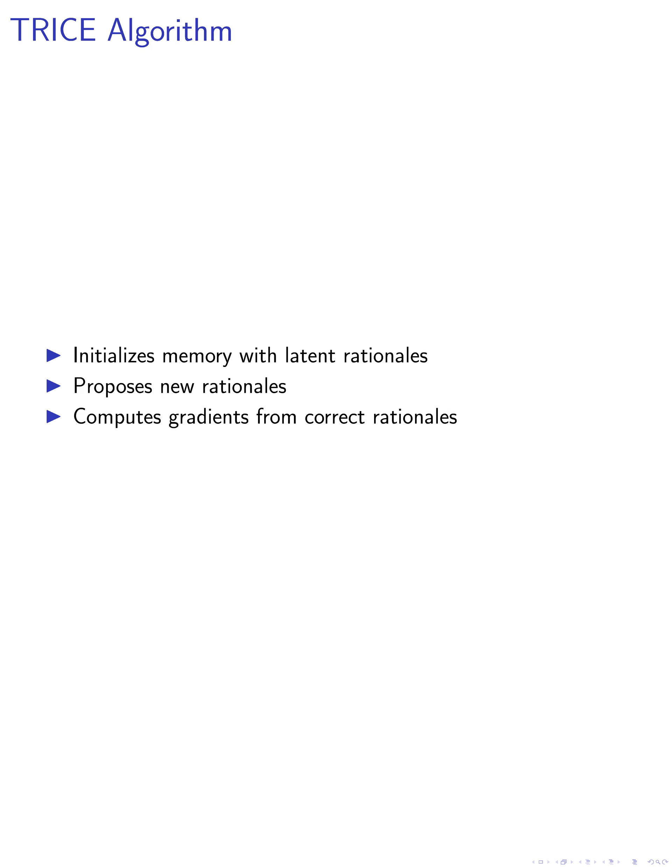Our main algorithm for Trice involves several steps. We begin by initializing a memory with latent rationales for each example pair, sampled from a hinted guide distribution.